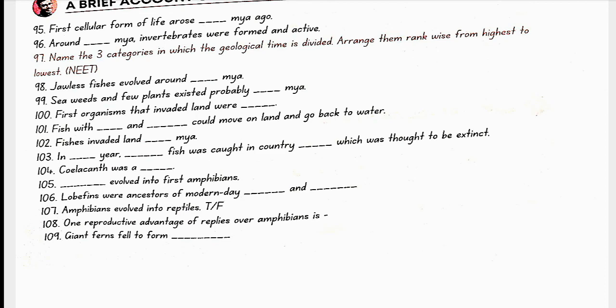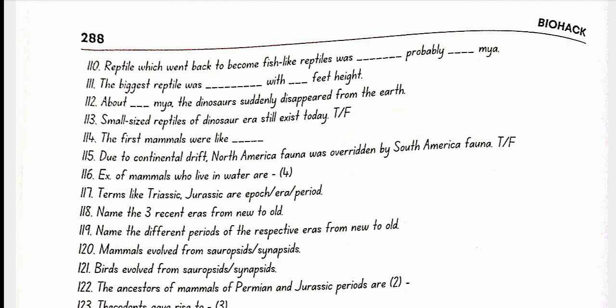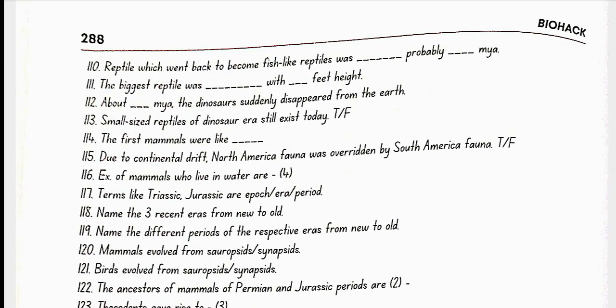Giant ferns fell to form coal deposits. Reptiles which went back to become fish-like reptiles were Ichthyosaurus, probably 200 million years ago. The biggest reptile was Tyrannosaurus rex with 20 feet height. About 65 million years ago, the dinosaurs suddenly disappeared from the earth. Small-sized reptiles of dinosaur era still exist today. Yes, true. The first mammals were like shrews. Due to continental drift, South America fauna was overridden by North American fauna. Example of mammals who live in water are whales, dolphins, seals, and sea cows.